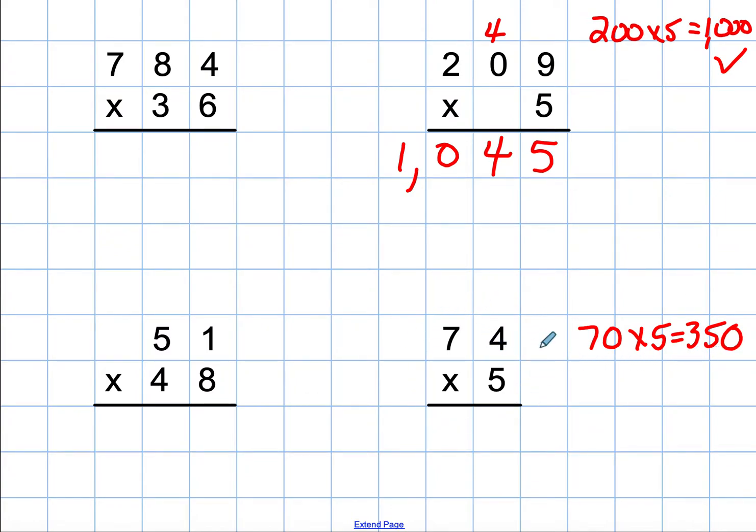Now let me do the multiplication. 5 times 4 is 20, so I place my 0, regroup the 2. 5 times 7 is 35, plus 2 more is 37, so 370, which is just a little bit more than 350.